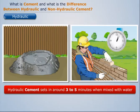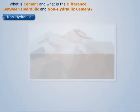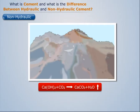Now let us see non-hydraulic cements. Non-hydraulic cement such as lime and gypsum plaster does not harden when exposed to water. Non-hydraulic cement should be kept dry in order to retain this. It takes a substantially longer time to dry off. Non-hydraulic cement such as slaked lime hardens due to the reaction of carbonation in the presence of carbon dioxide naturally present in the air.